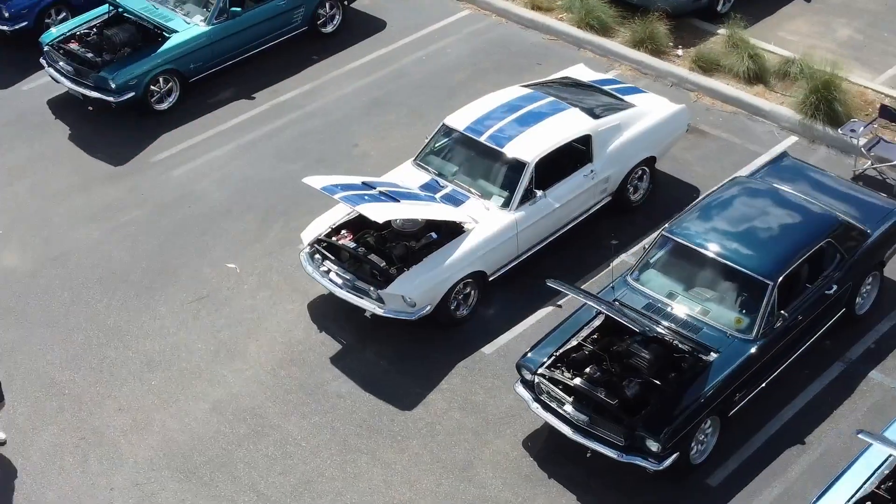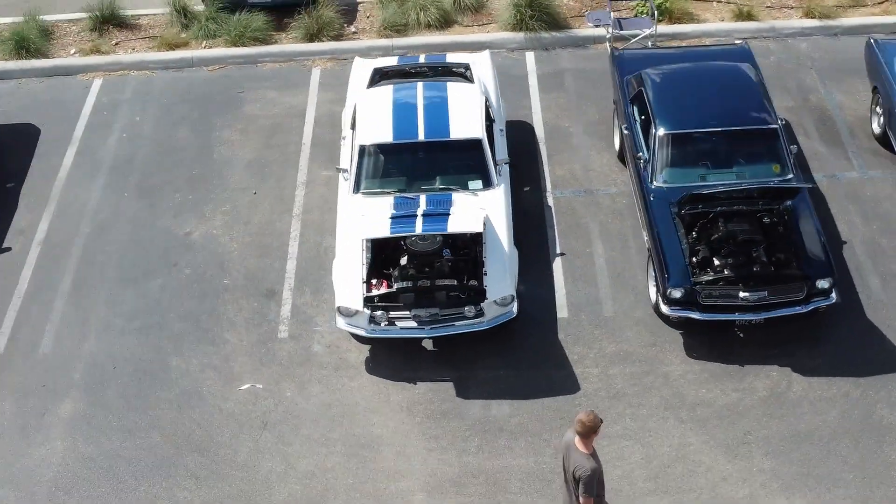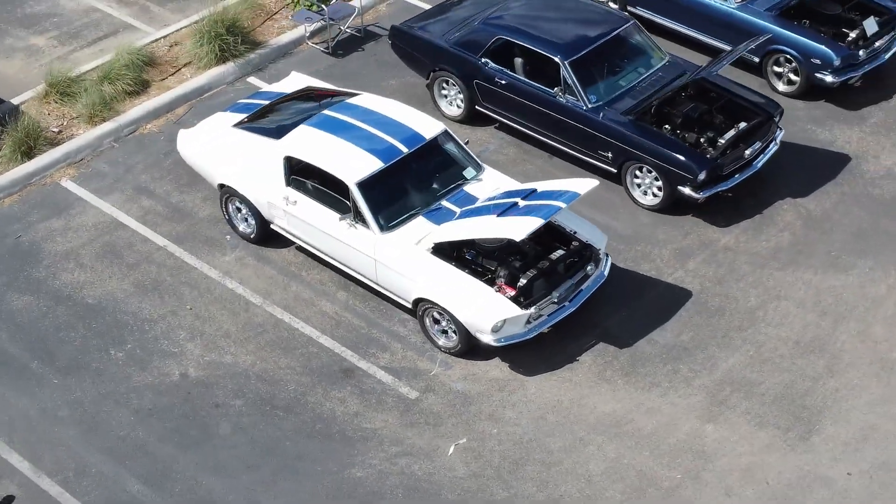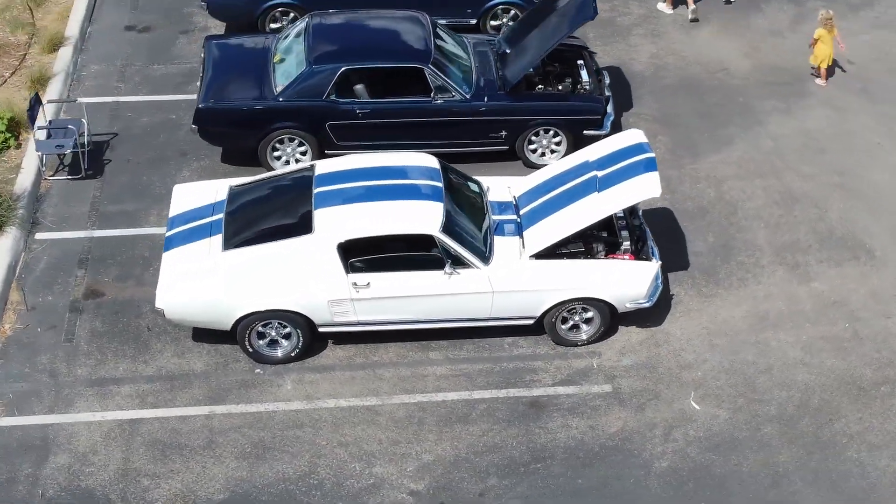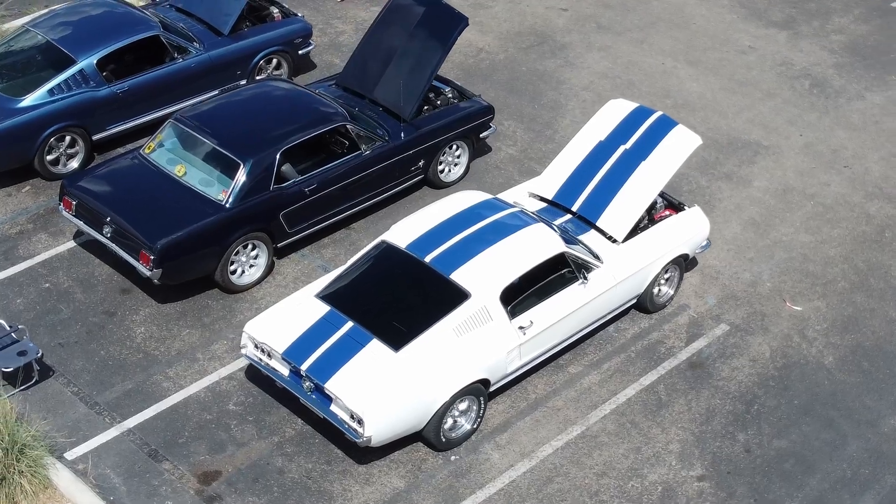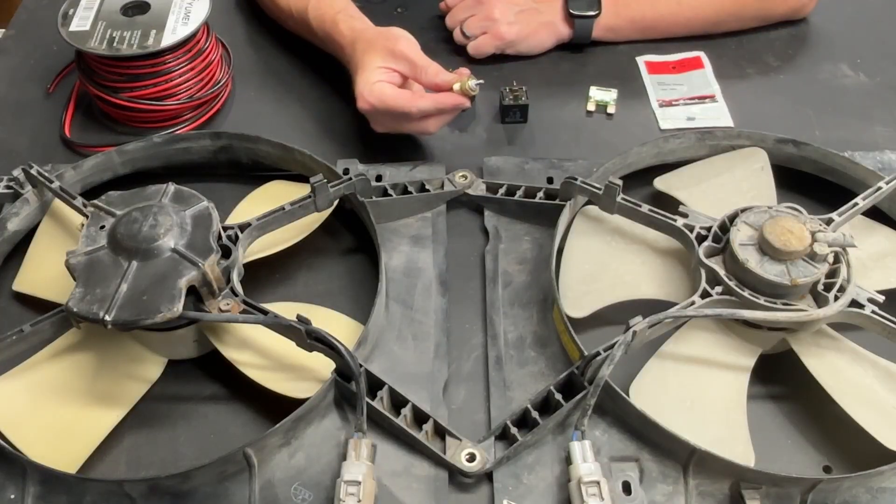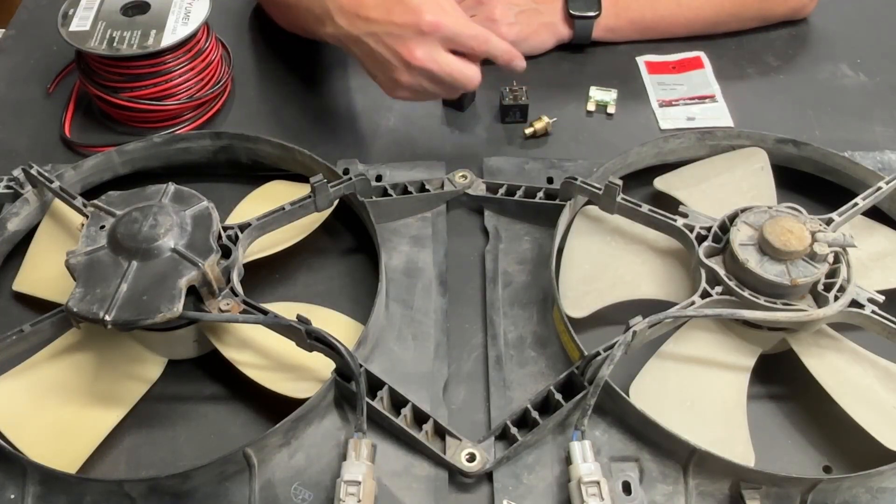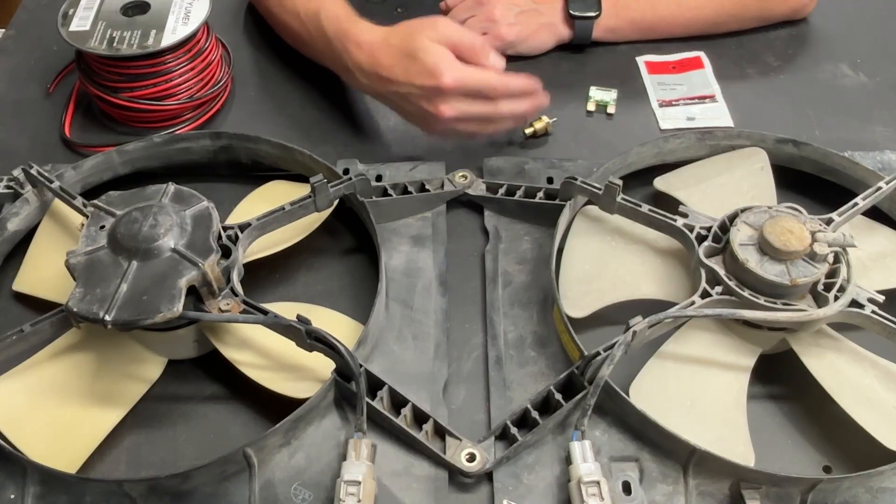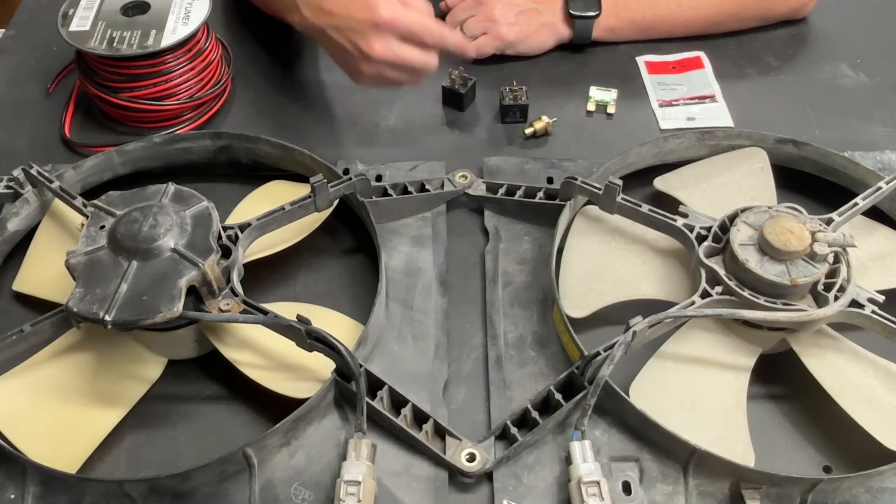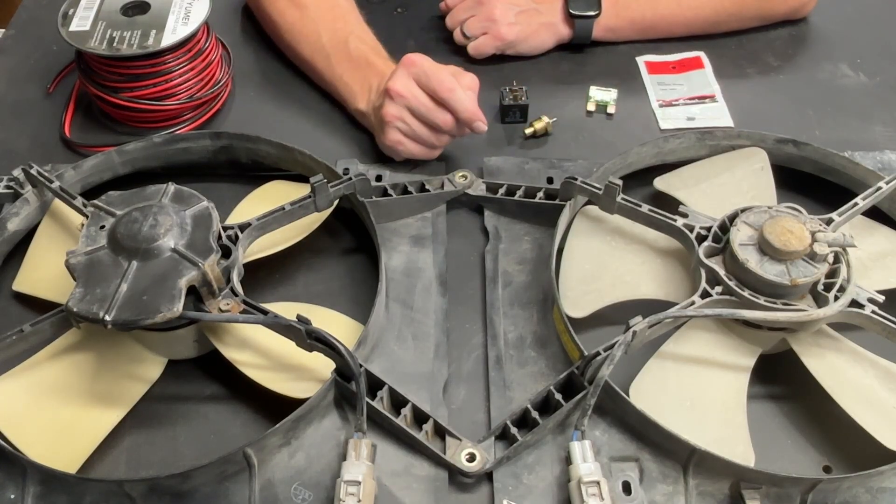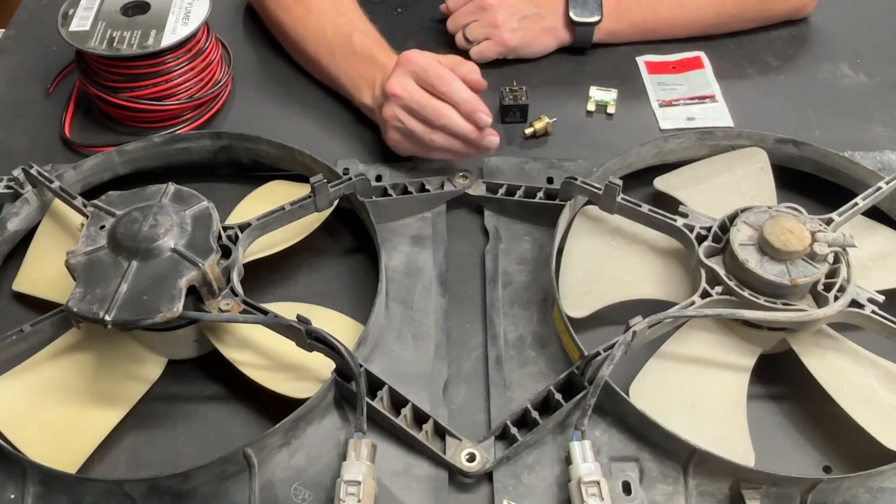He's got two fans on his classic Mustang. They are big fans, they draw a lot of amps, and he's got them basically set up with a simple relay system and a thermal switch. And basically when the thermal switch hits a certain temperature it triggers the relays, the fans turn on, and when it does his lights dim.